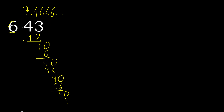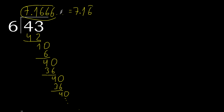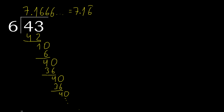Finish it — 43 divided by 6 is 7, and after the point: 1, 6 repeating, 6 repeating. Ok — like this, or like this. The answer. Ok.